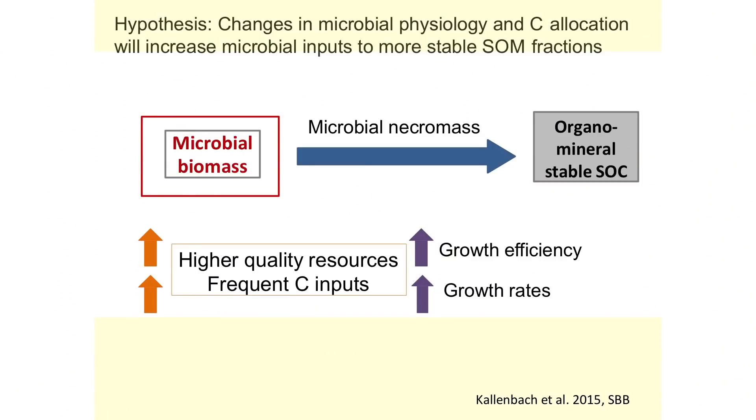We thought the result had something to do with the cover crops, which have a very low carbon-to-nitrogen ratio — a nutrient-rich resource that the microbes should love. We thought it would promote greater microbial growth efficiency and growth rate, and a bigger, healthier microbial population. Our thinking was that the changes in microbial physiology and carbon allocation would increase microbial carbon inputs to more stable carbon fractions. In other words, a higher proportion of new inputs should be converted to soil carbon in that organic system because of the higher growth efficiency and growth rates of the microbial communities.